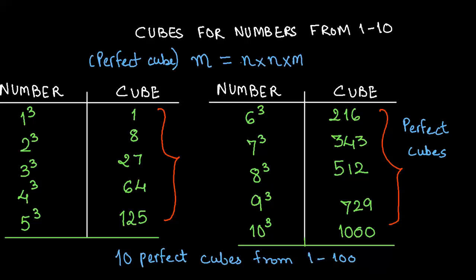One of the things that straight away comes when we look at this is that there are only ten perfect cubes from one to thousand. And if you remember there were only ten perfect squares from one to hundred. So this should ring a bell in your mind as to the properties.